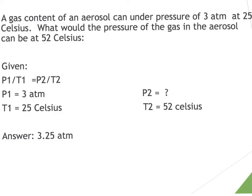Here is a Gay-Lussac's Law problem. The gas contents of an aerosol can are under a pressure of 3 atmospheres at 25 degrees Celsius. What would the pressure of the gas be at 52 degrees Celsius? Using P1 over T1 equals P2 over T2, P1 is 3 atmospheres and P2 is our unknown. Both temperatures are in Celsius, so we must convert: 25 plus 273 for T1, and 52 plus 273 for T2. Solving for P2, we get an answer of 3.27 atmospheres.